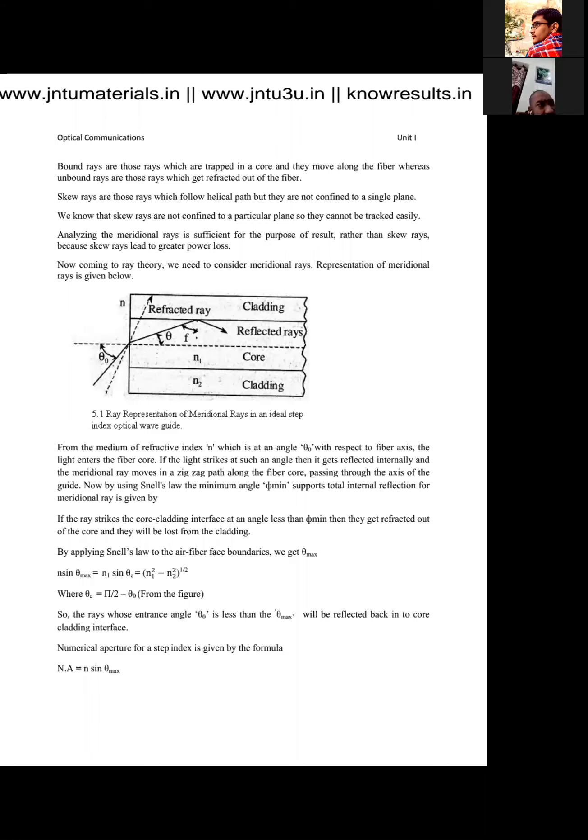The rays travel from core to cladding. The rays which are trapped in a core are called bounded rays. The rays which are refracted from core and coming out of the cable are called unbounded rays. I repeat, bounded rays are the rays which are trapped in a core, and the rays that are refracted from core and coming out of the fiber are called unbounded rays.